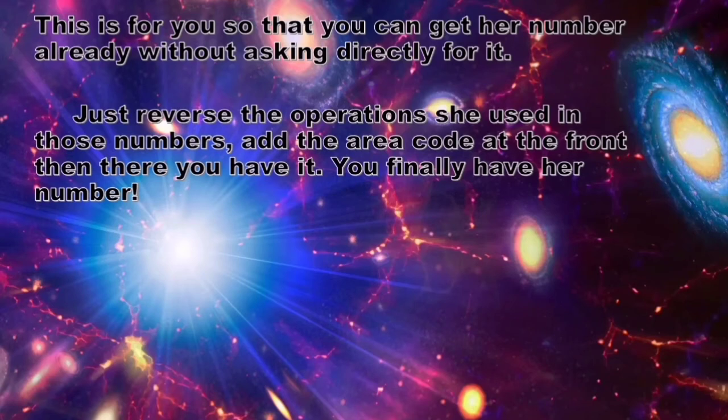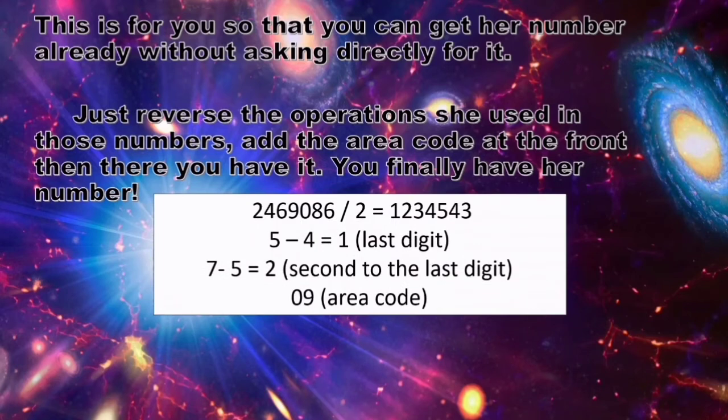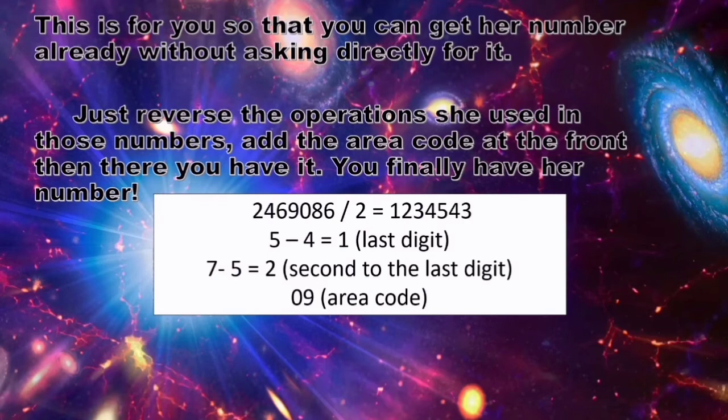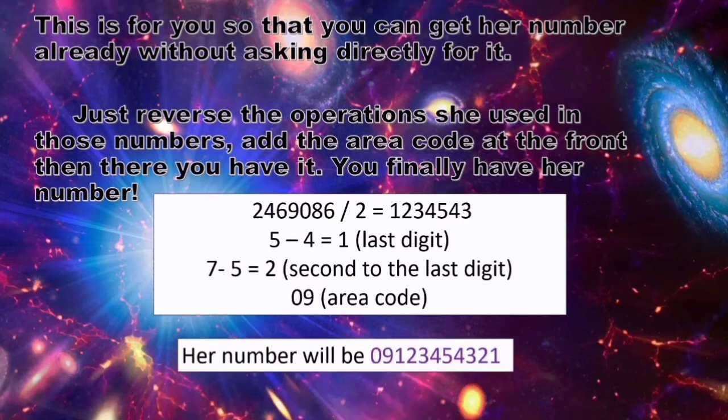This is for you so that you can get her number already without asking directly for it. Just reverse the operations she used in those numbers, add the area code at the front, then there you have it. You finally have her number. Just arrange the numbers on how you get it and you will get her number already. Her number will be 0 9 1 2 3 4 5 4 3 2 1.